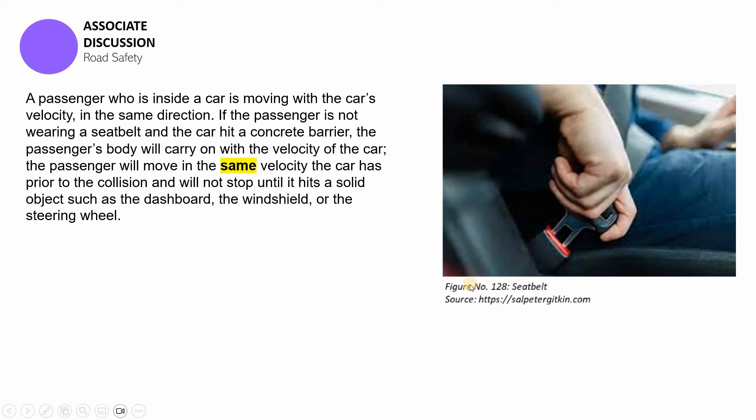So just imagine if the car is now moving at, say, for instance, 120 kilometers per hour—that's the movement of the car, that's the velocity of the car—then we can also say that the body inside the car is moving at 120 kilometers per hour in the same direction. So we have to always remember that the velocity of the car is corresponding to the velocity of the body that is inside the car.